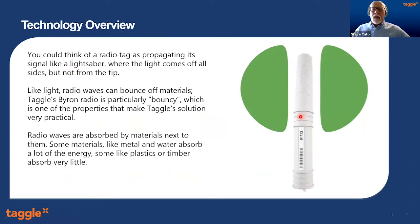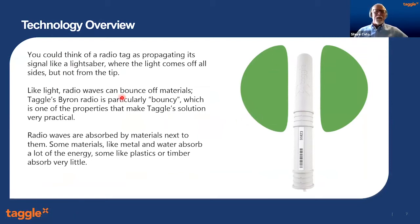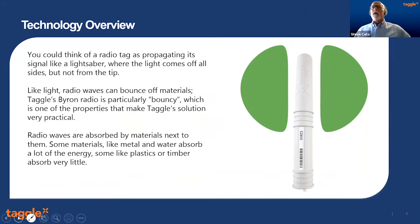How do the radio waves come off the antenna? Speaking to one of our in-house experts, Mr. Kenny, he said you can think about it like a lightsaber — the light doesn't come off the tip, it comes off the sides. The tip is actually a null point, and the radio waves radiate out from the sides of the antenna. Radio waves bounce off things. Tagle's Byron radio is particularly bouncy, which makes it very well suited to what we do — it can bounce off hard surfaces and make its way to the receiver even without direct line of sight.